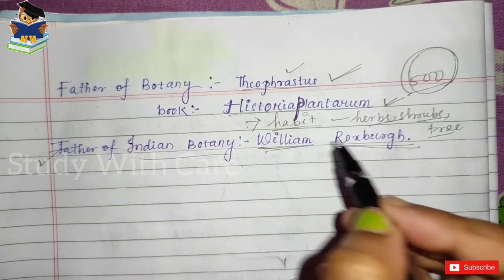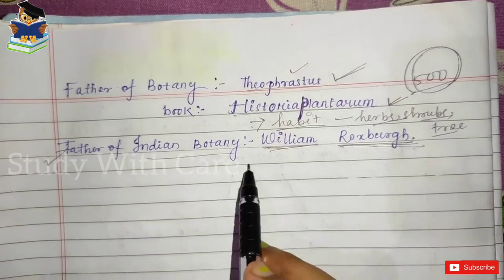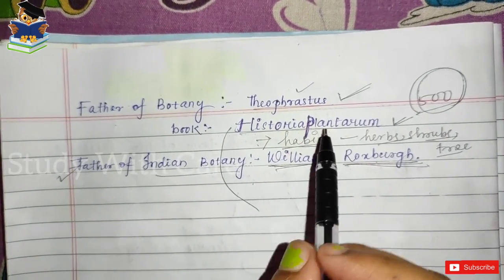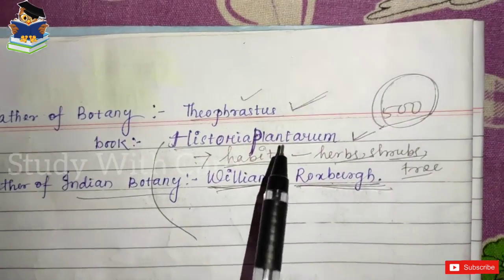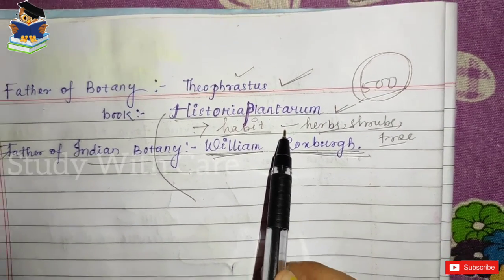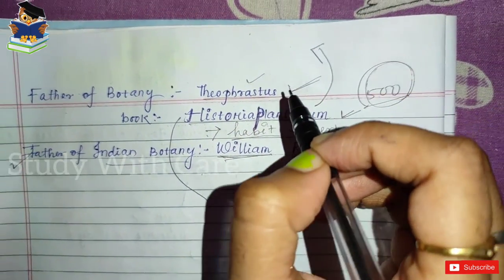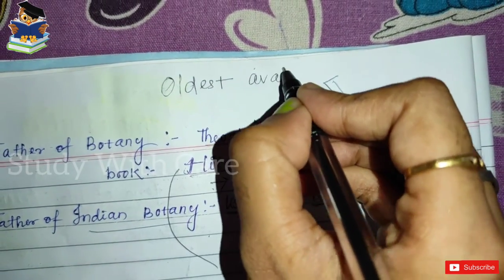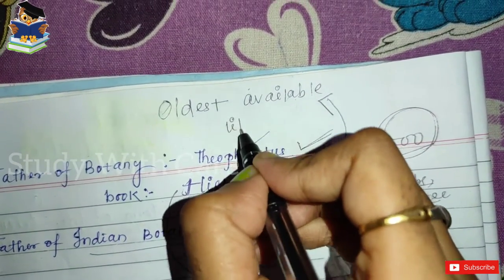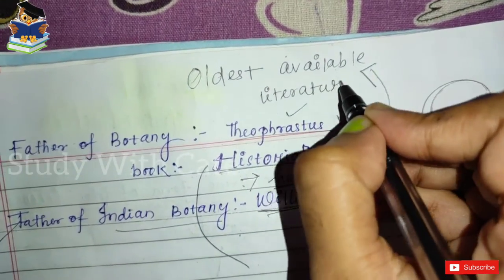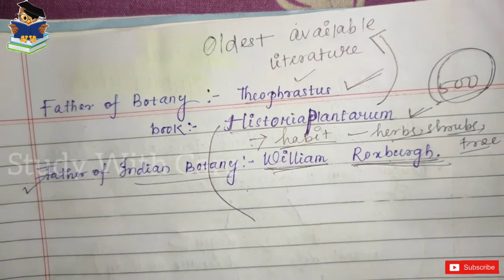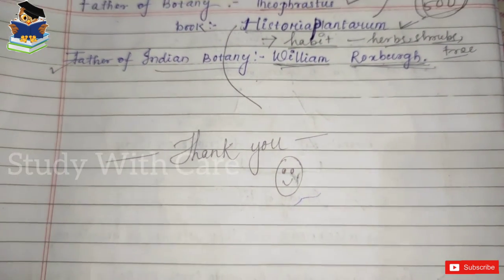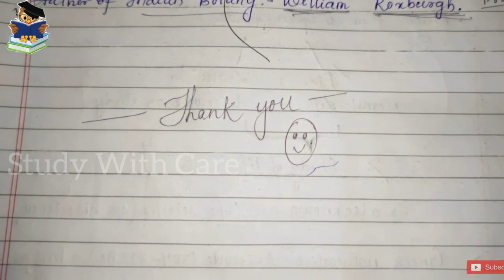The father of Indian botany is William Roxburgh. Historia Plantarum, written by Theophrastus, is considered to be the oldest available literature in the field of botany. If you liked the video, please like, share, and subscribe. Thank you.